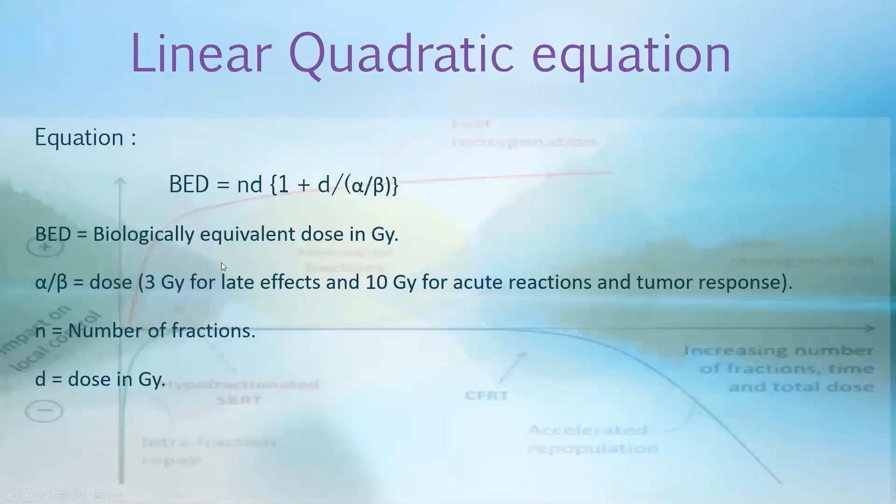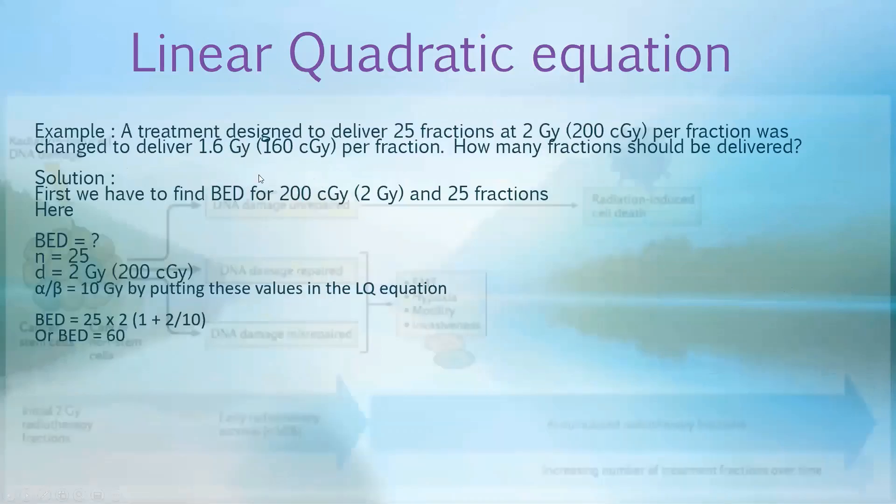Please make sure that you do deliver the dose that is decayed. And the alpha beta concept that we discussed in detail, if you have questions, we will discuss it again. When we solve questions on this, we will have an example. In this example, we will have a patient who is supposed to get 200 centigrade in 25 fractions. But before the treatment starts, the physician decided that we want a fraction of 160 centigrade instead of 200 centigrade. So now how many fractions do we need to deliver? Our concept of alpha beta ratio will come in handy.